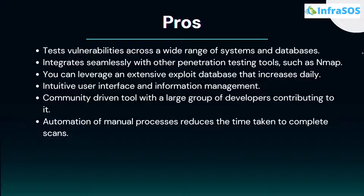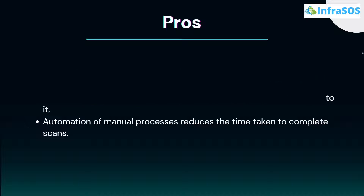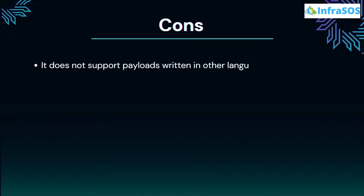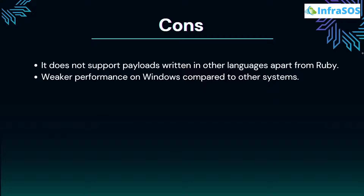Cons of Metasploit include that it does not support payloads written in languages other than Ruby, which is considered a great downfall, and it has weaker performance on Windows compared to other systems like Linux.